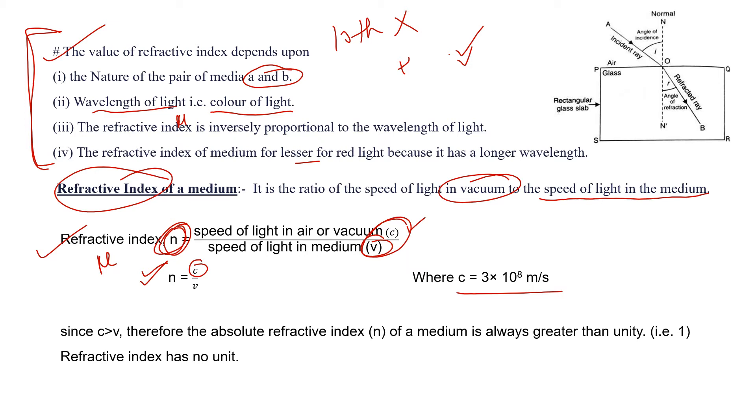Since c is always greater than v, the absolute refractive index n of the medium is always greater than 1. The answer will be one point something or two point something. Refractive index has no units because meter per second cancels out.